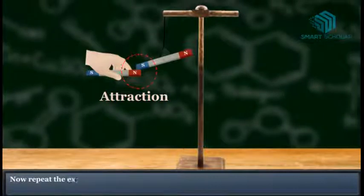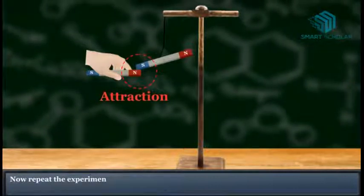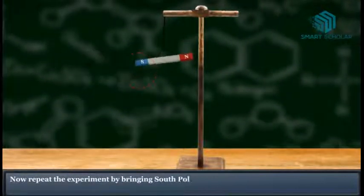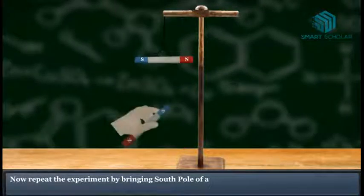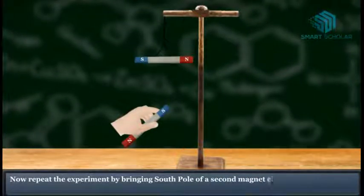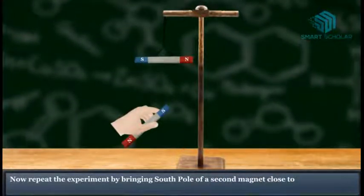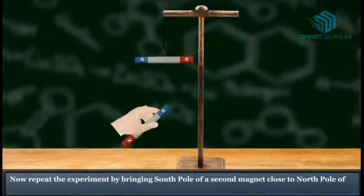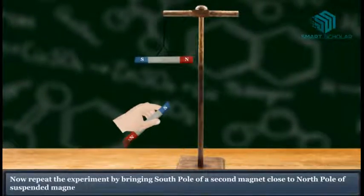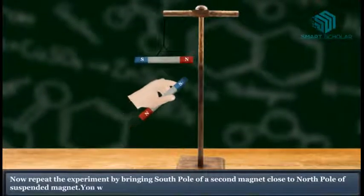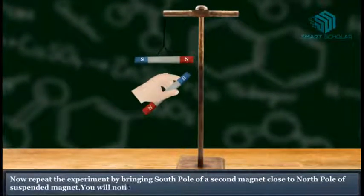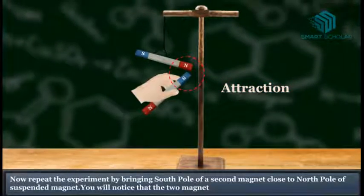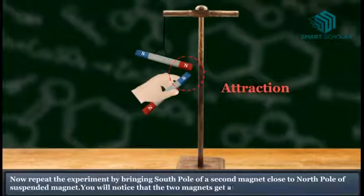Now repeat the experiment by bringing the south pole of the second magnet close to the north pole of the suspended magnet. You will notice that the two magnets get attracted towards each other again.